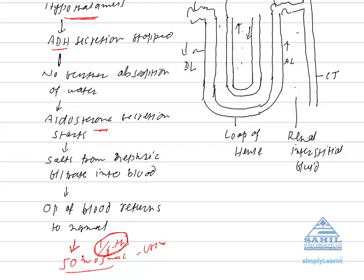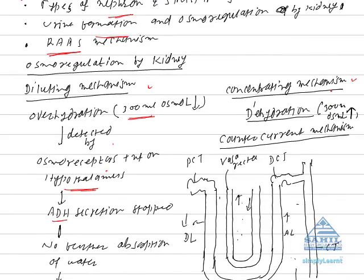To see how hypertonic urine is formed, this mechanism of urine formation is called the concentrating mechanism. It occurs in case of dehydration, which is when we take less amount of water. When we take less water, less water is absorbed into blood, so concentration of solute increases in blood. This leads to increase in osmotic pressure of blood plasma, which starts the counter-current mechanism of urine formation, by which hypertonic urine is formed.